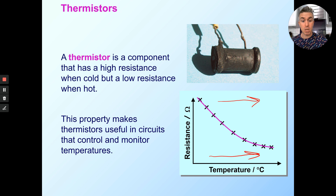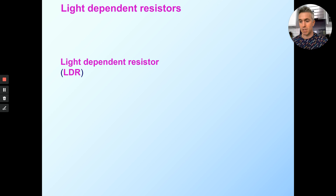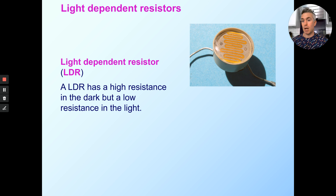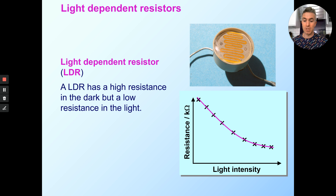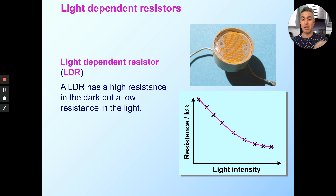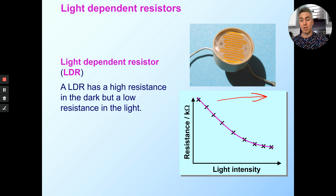This makes thermistors useful to control temperature. The last of the strange resistors is the light-dependent resistor, or LDR. It's similar to the thermistor — in normal conditions it has a high resistance, it's another semiconductor, but when light hits it, those loosely bound electrons can escape. The light comes in and releases those loosely bound electrons so they can flow. As it gets brighter, more electrons are released, so the resistance goes down.